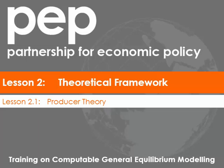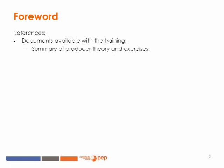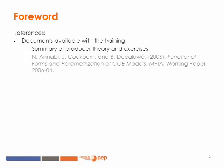Welcome to this first lesson on the producer theory. Along with this lesson and this video, you have access to some references. Some documents are available with the training. The first one is a summary of the producer theory along with exercises, and the second is a reference on functional forms used in CGE models. This document will also be used in the lesson on the consumer theory.